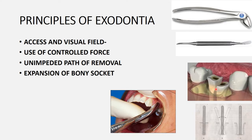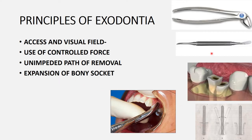The fourth basic principle is expansion of the bony socket. It is important to first expand the bony socket rather than attempting to extract the tooth immediately, because without expansion the tooth may fracture. The beaks of the forceps must be placed on the root portion — not the crown — and the socket is expanded with the elevator before inserting the forceps to the root level.